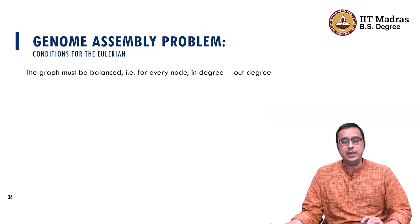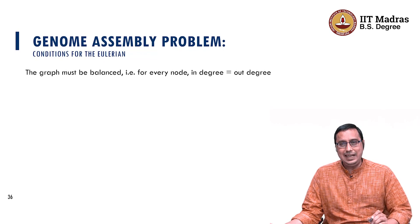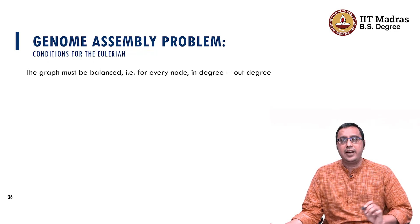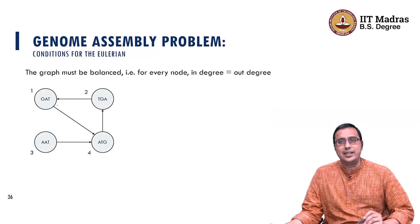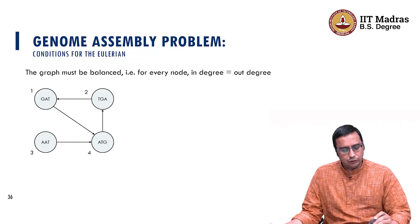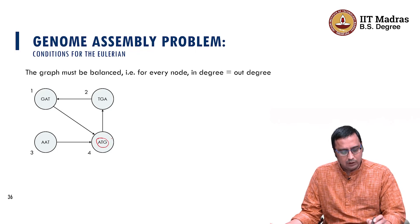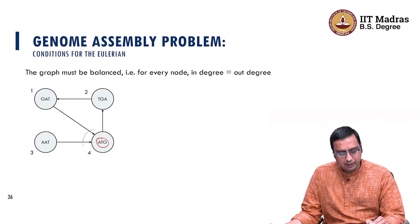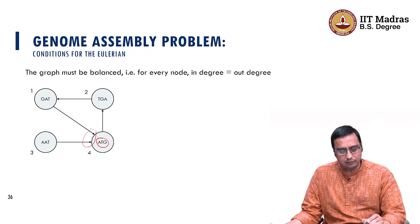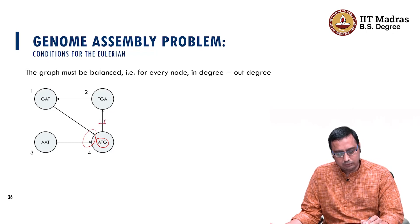The next condition is that the graph must be balanced. For every node, in-degree must be equal to out-degree. This is particularly the case for a directed graph where in-degree and out-degree are defined — the number of incoming edges and number of outgoing edges. For example, in this particular graph, if we look at node number 4, there are two directed edges going in and one directed edge going out.